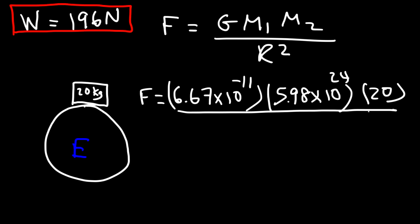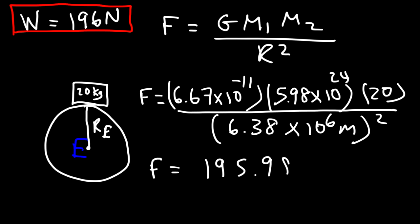Now the mass of the earth, that's 5.98 times 10 to the 24 kilograms. The mass of the block, m2, is 20 kilograms. And the distance between the center of the earth and the surface of the earth, because the block is on the surface, that's the radius of the earth, which you can call re. And you look up this value in a textbook. It's 6.38 times 10 to the 6 meters, and we need to square it. So go ahead and type these numbers into your scientific device. Give me a few seconds, I'm almost done. So the answer that I got is 195.98 newtons.